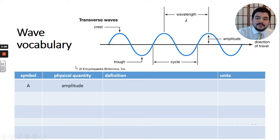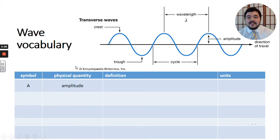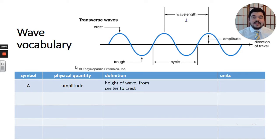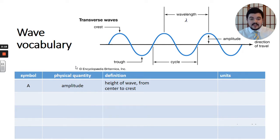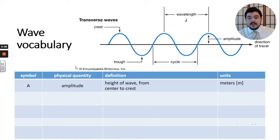Our first physical quantity is amplitude. Capital A is our symbol for amplitude. Its definition is the height of the wave from the center up to the crest — so it's the center to crest distance — and its units are in meters, symbol m.